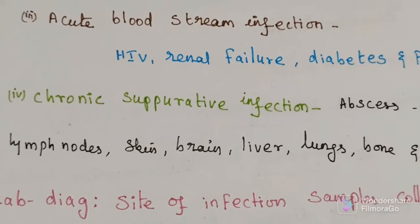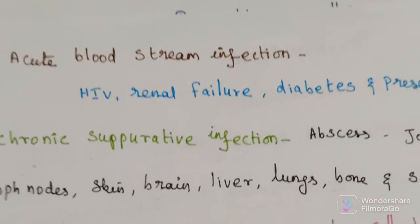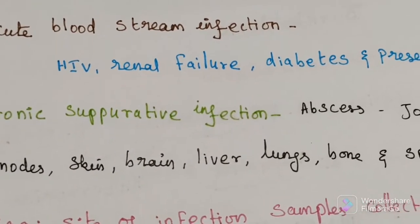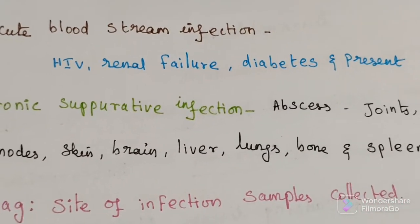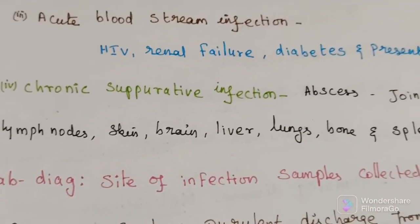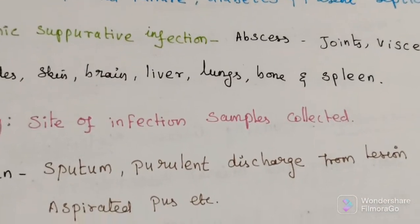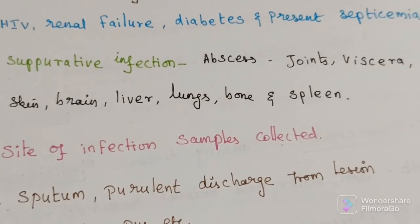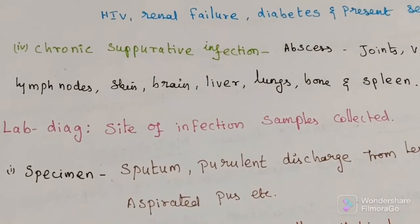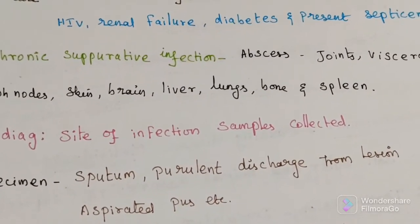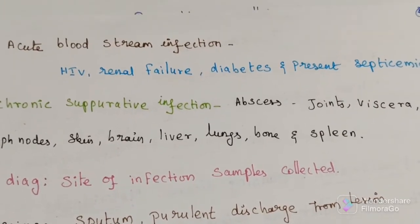Third is acute bloodstream infection, which can be seen in immunosuppressed patients such as those with HIV, renal failure, or diabetes. Fourth is chronic suppurative infection, in which various abscesses are found in joints, viscera, lymph nodes, skin, brain, liver, lungs, bone, and spleen. Multi-organ abscesses can also be seen.